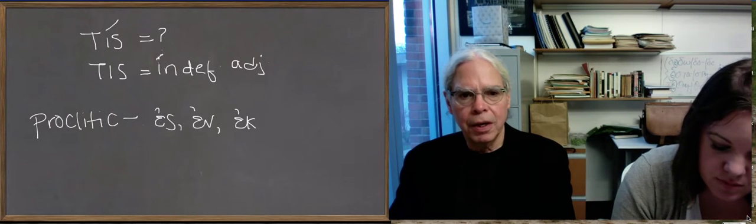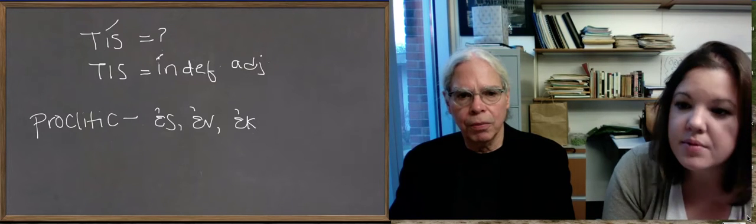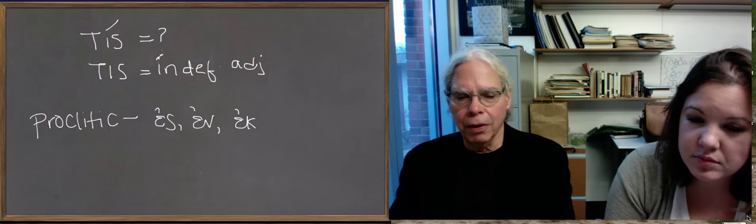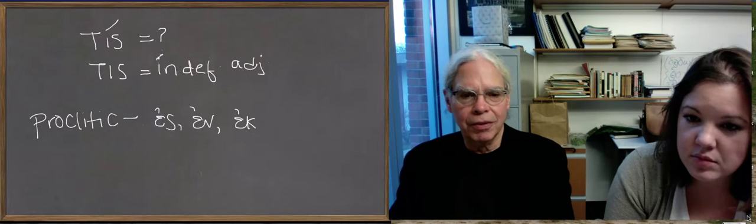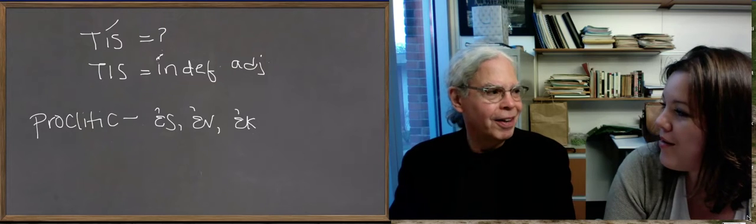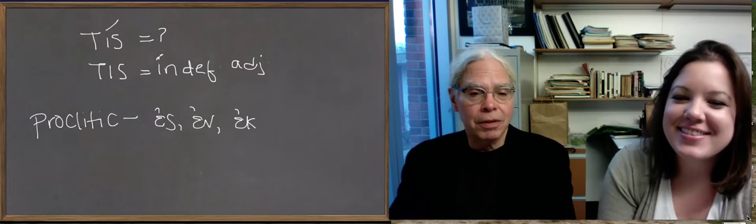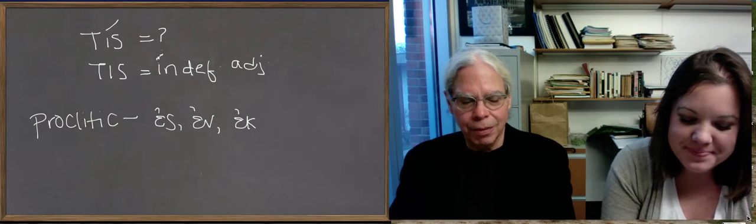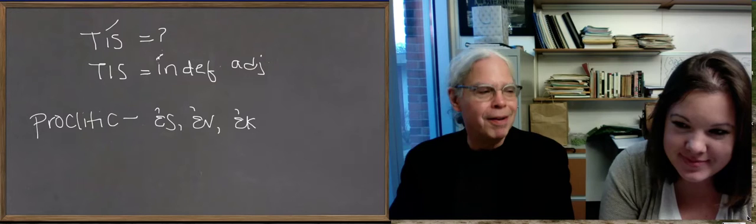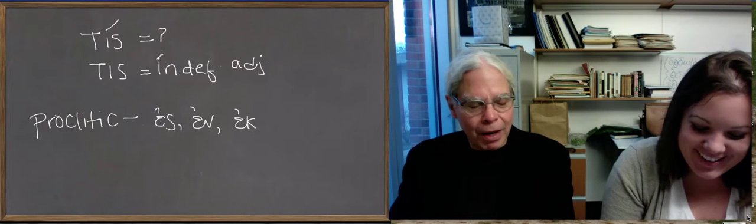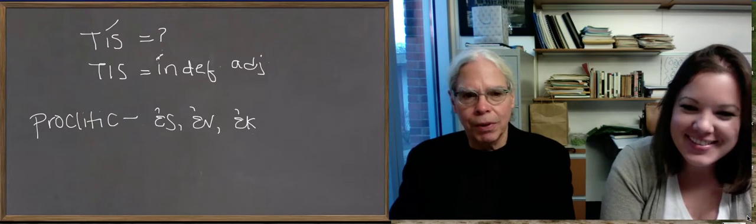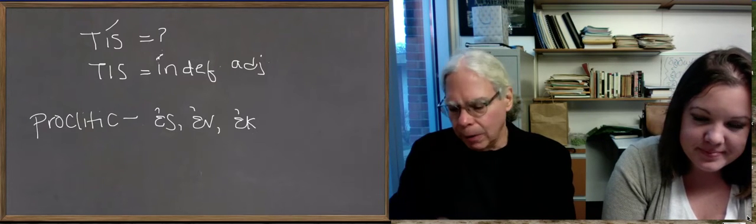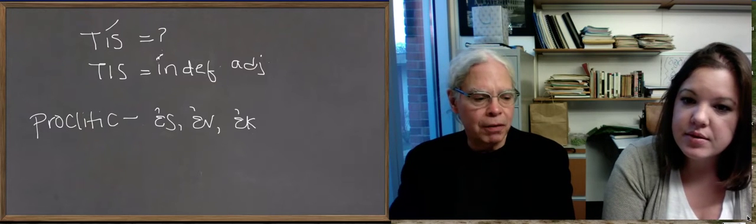And a proclitic is a word like the prepositions εἰς and ἐν, for example, that we've had, and ἐκ. There are proclitics. What happens is they, they become a syllable on the word that follows them. So if you say, εἰς τὴν πόλιν, to the city-state, which is actually the etymology of Istanbul. Wow. So that, εἰς τὴν πόλιν comes from, anyhow, it means to the city. It becomes one word.